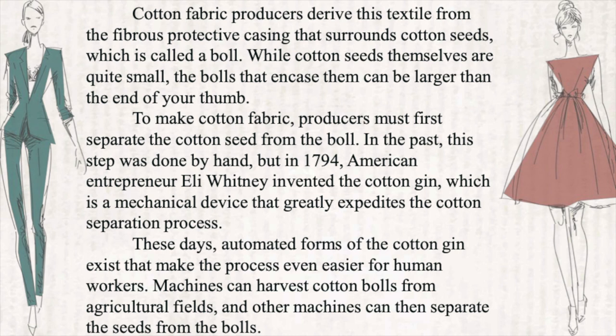In 1794, American entrepreneur Eli Whitney invented the cotton gin, which is a mechanical device that greatly expedites the cotton separation process. These days, automated forms of cotton gin exist that make the process even easier for human workers. Machines can harvest cotton bolls from agricultural fields, and other machines can then separate the seeds from the boll.